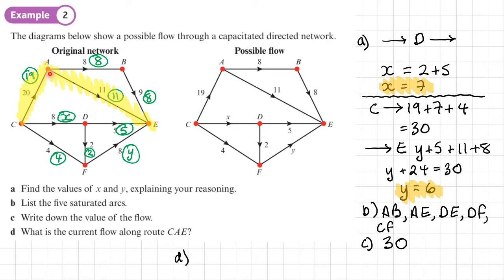To find the flow along a particular route, we look for the lowest value on that route. Although arc CA has a flow of 19, arc AE only has a flow of 11. So if we take the complete route from C to A to E, its flow is only 11. Eight of those from CA go to B rather than E. Think of it like water pipes — there may be multiple pipes. The important point is: when looking at the flow of a route, take the lowest value on that route. The current flow along route CAE is 11.